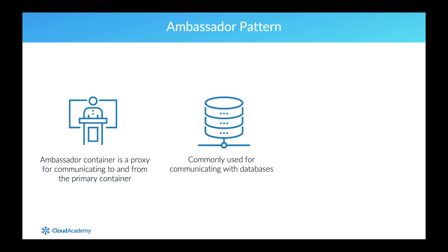This pattern is commonly used to communicate with a database. You can configure environment variables in the primary container to control the database connection. But with the ambassador pattern, the application can be simplified to always connect to localhost, with the responsibility of connecting to the right database given to the ambassador. In production environments, the ambassador can implement logic to work with sharded databases as well. But the application in the primary container only needs to consider a single logical database accessible over localhost.